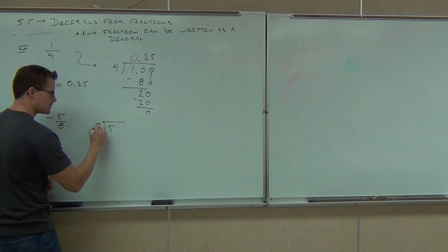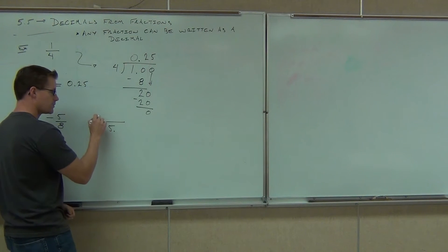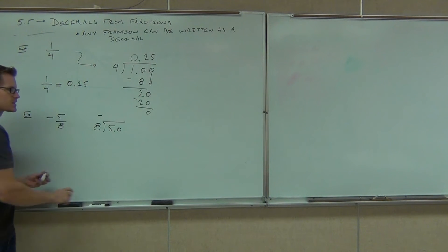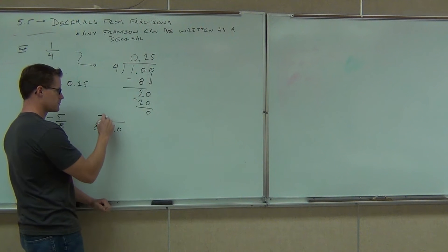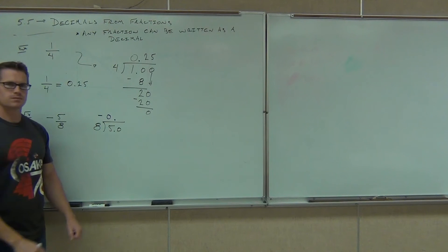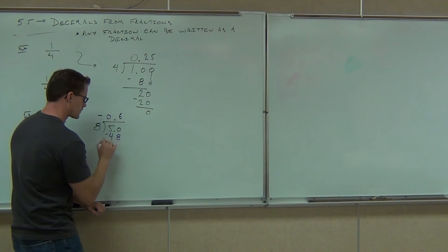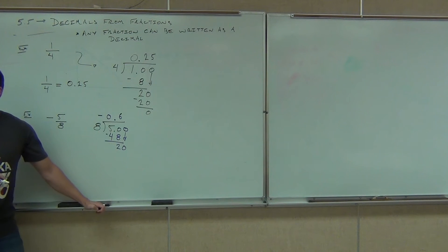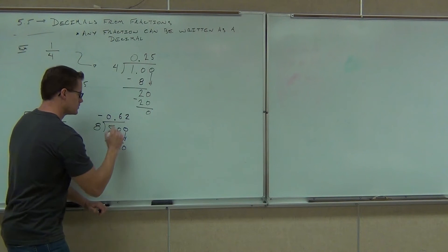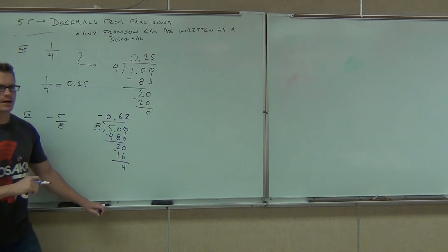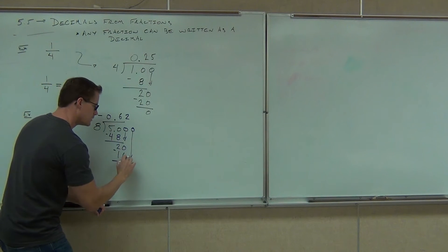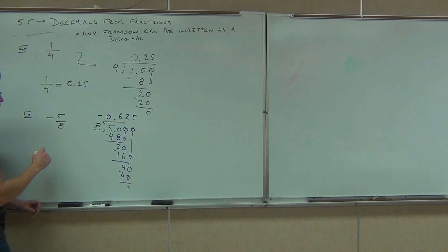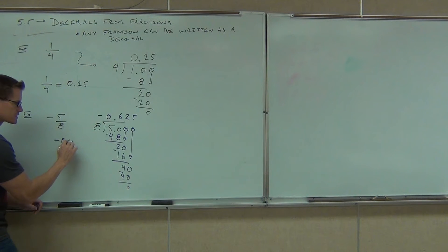What number goes on the outside? Eight. I'm going to have a negative up there because this was negative — it means my decimal is going to be negative. How many times does eight go into five? Zero. I'm going to have my decimal. How many times does eight go into 50? Six. If I subtract, I get two. I'm going to add another zero after that decimal and bring it down. Eight into 20? Two. I subtract, I get four — I'm not done yet. I've got to keep adding those zeros until I end with a zero remainder. How many times does eight go into 40? Five. That gives us 40. If I subtract, I get zero. So we know that the decimal equivalent for this fraction is negative 0.625. Don't forget about that negative.